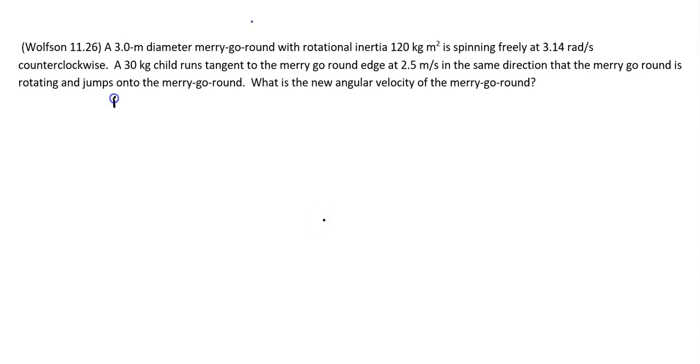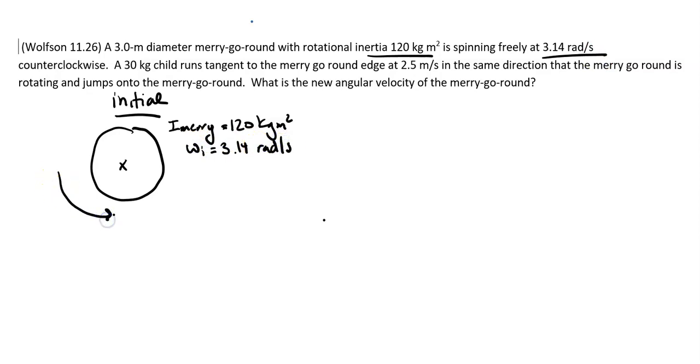Okay, so you've drawn it yourself, now you can just use mine for editing. Let's see, we have our initial picture—a good old merry-go-round. It has rotational inertia, so I'll say I of the merry-go-round is 120 kilogram meter squared. It's spinning at 3.14 radians per second initially counterclockwise.